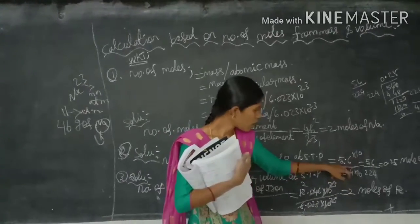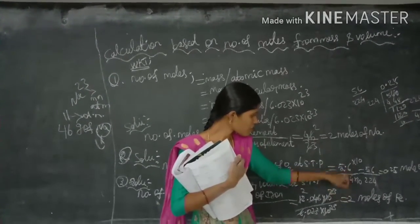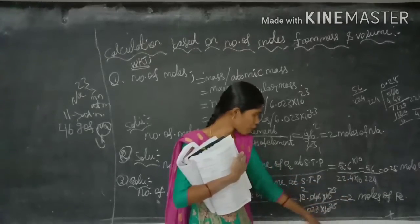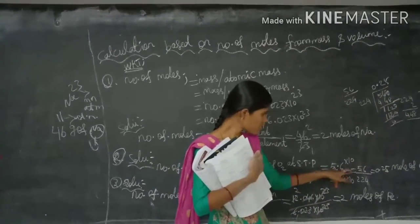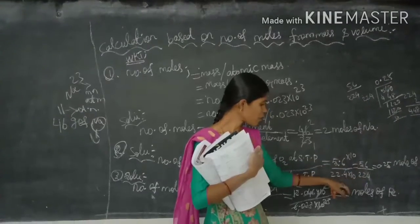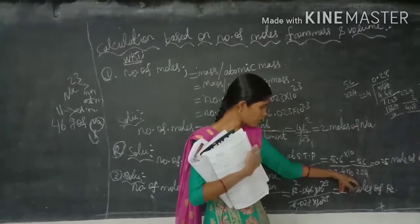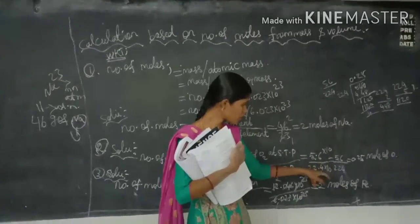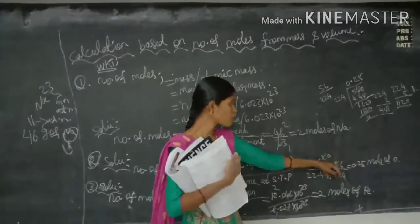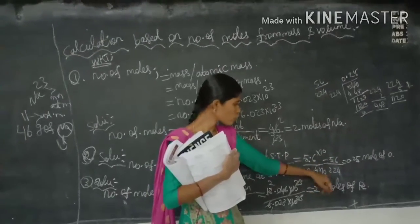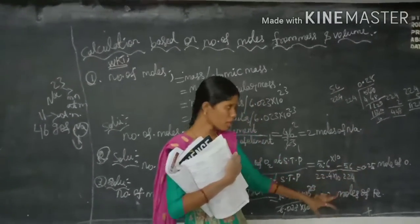Removing the decimal point by multiplying numerator and denominator by 10 gives 56 ÷ 224. Simplifying: 56/224 = 0.25 moles of oxygen.